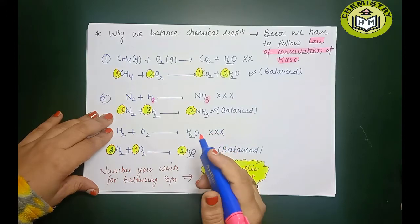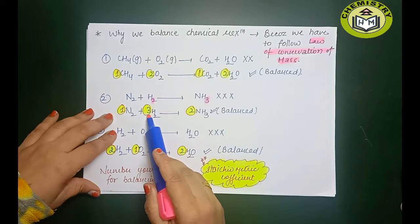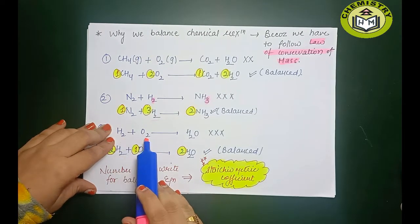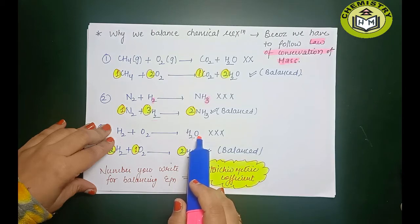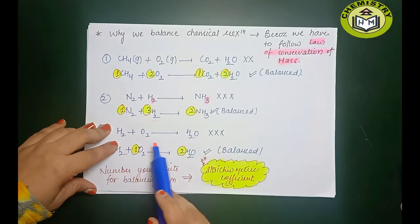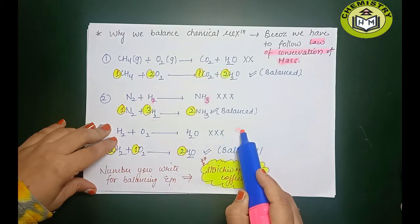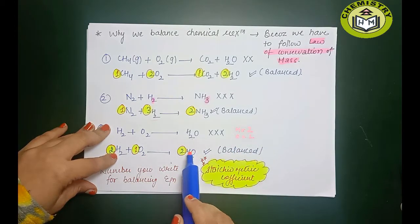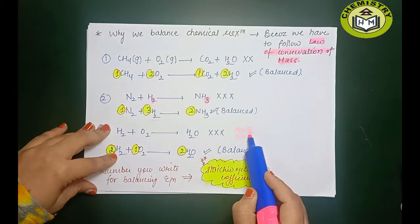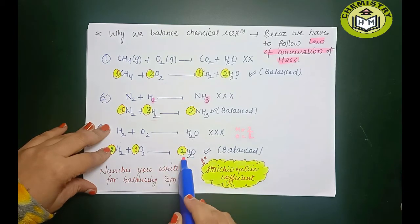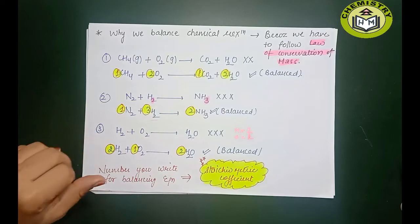To fix the N₂+H₂ reaction, I multiply H₂ by 3 here and write 2 for ammonia — now the reaction is balanced. For H₂ + O₂ → H₂O: here oxygen is 1 on the product side but 2 on the reactant side. To balance, multiply H₂O by 2 and H₂ by 2, so reaction is balanced. Check: H is 4 on both sides, O is 2 on both sides.